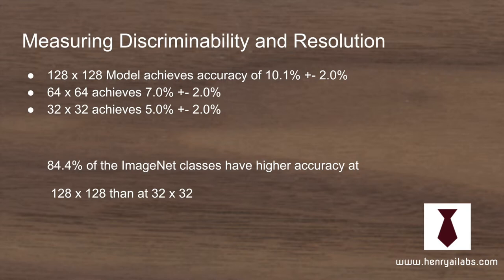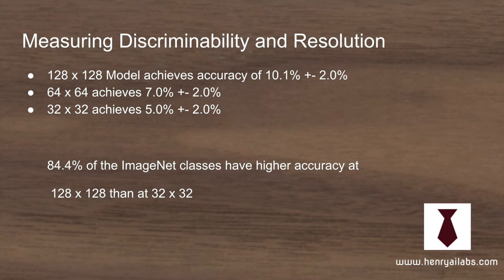They find that the 128x128 model has much higher accuracy relative to the 64 and 32 resolution models. Generally, 84% of ImageNet classes are easier to discriminate at 128x128 compared to 32x32. This also raises the question of what 1,024x1,024 would achieve, though that's not currently feasible due to model size and computational complexity. It is likely that really high resolution datasets would make classification models easier to train.